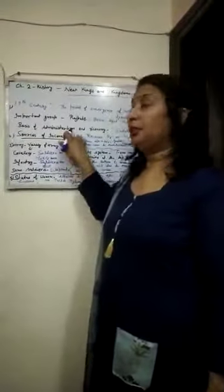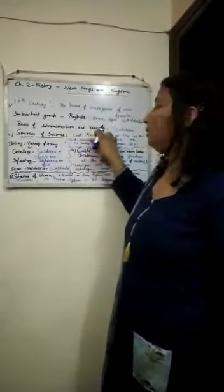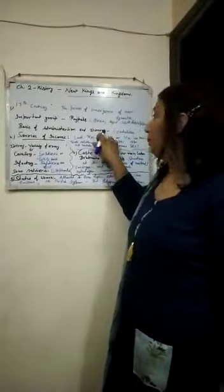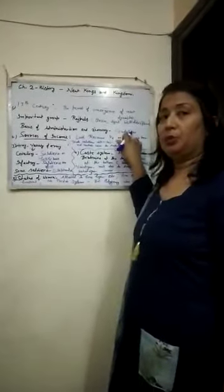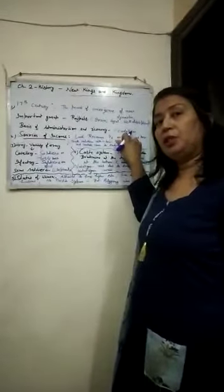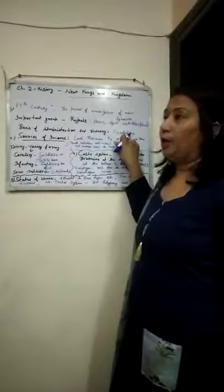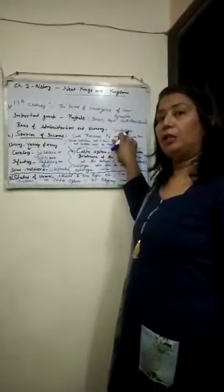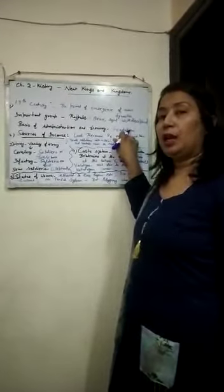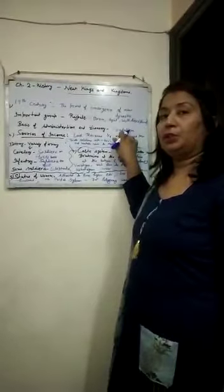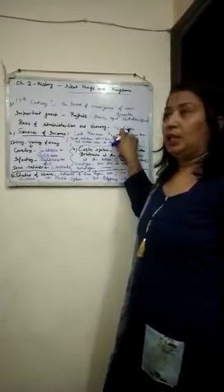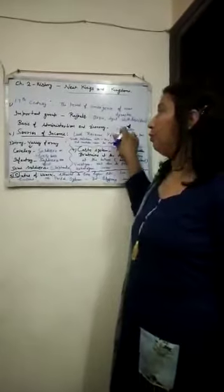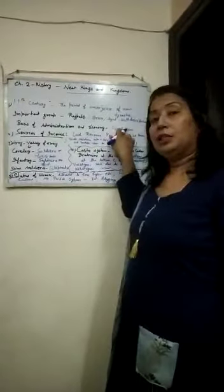What was the basis of administration and economy of the Rajput period? That was feudalism. Feudalism was a system under which rulers used to grant land pieces to the Jagirdars, and Jagirdars used to collect the land revenue from these lands.